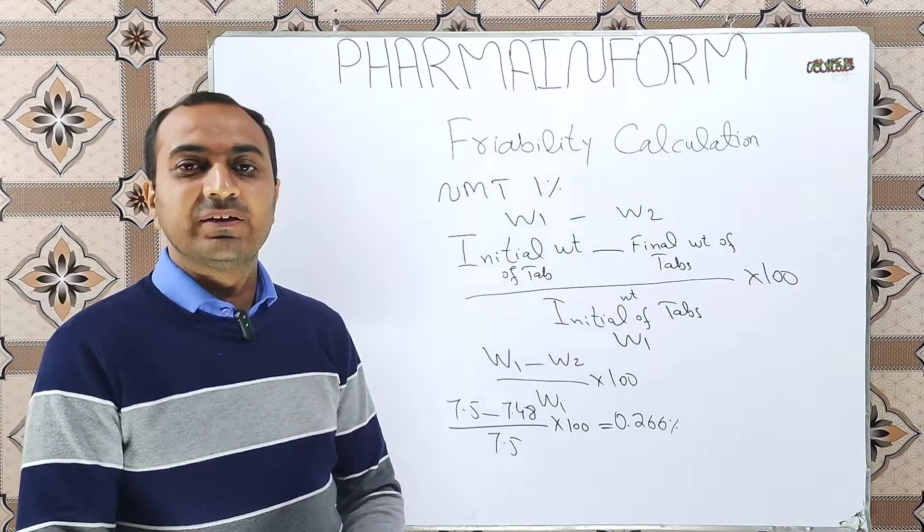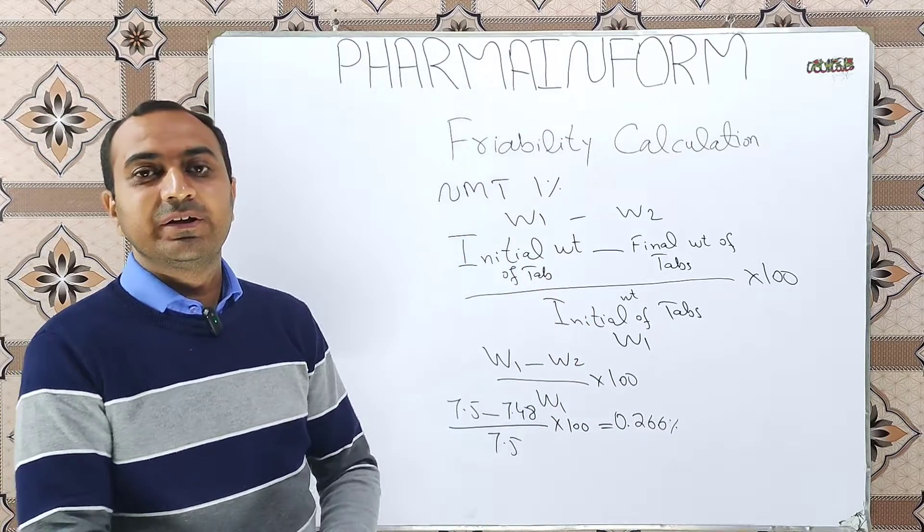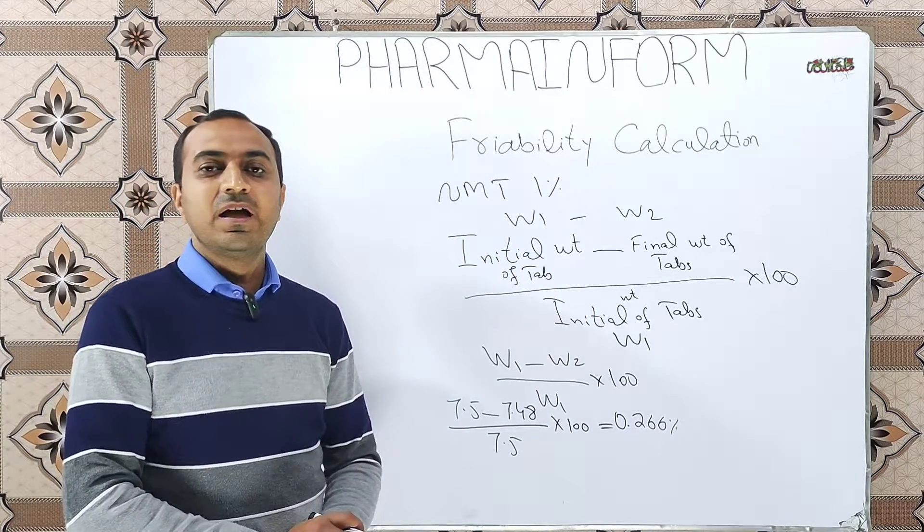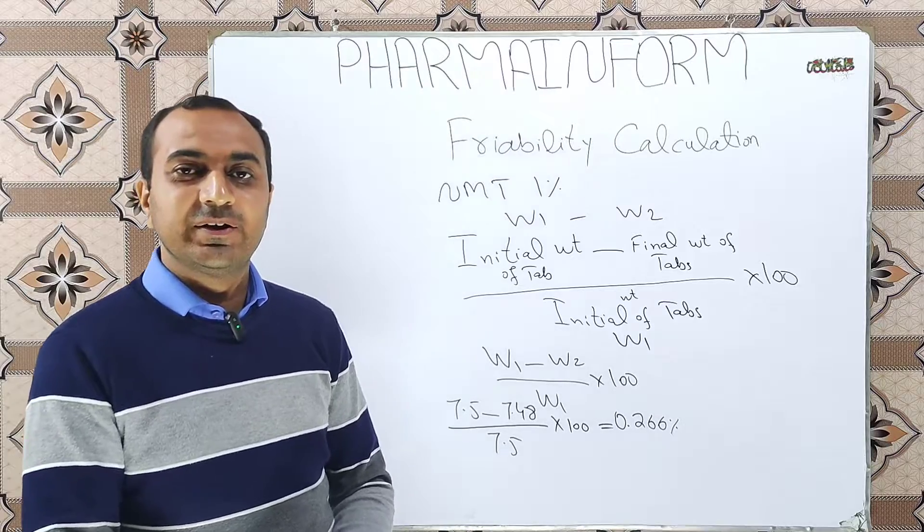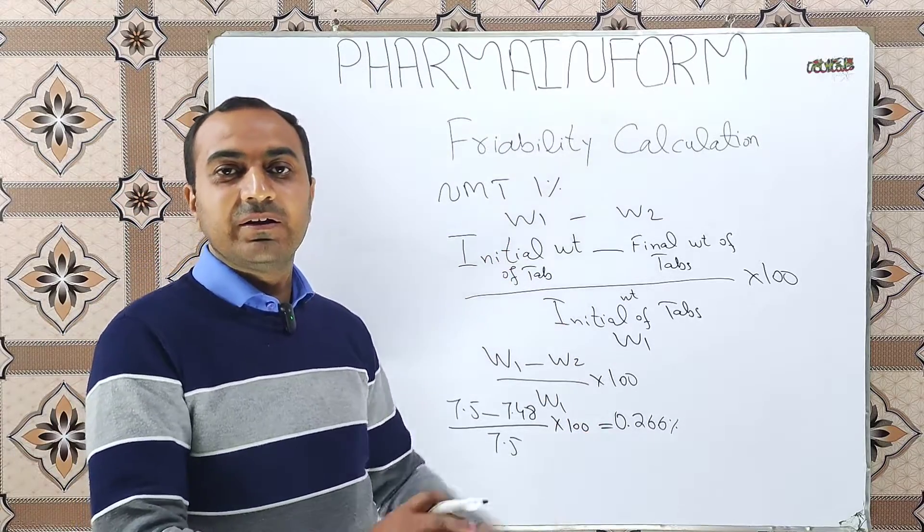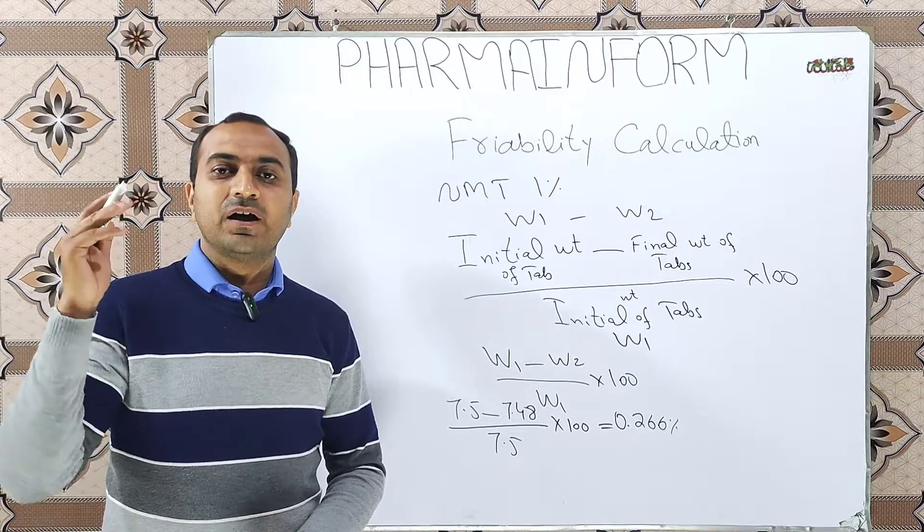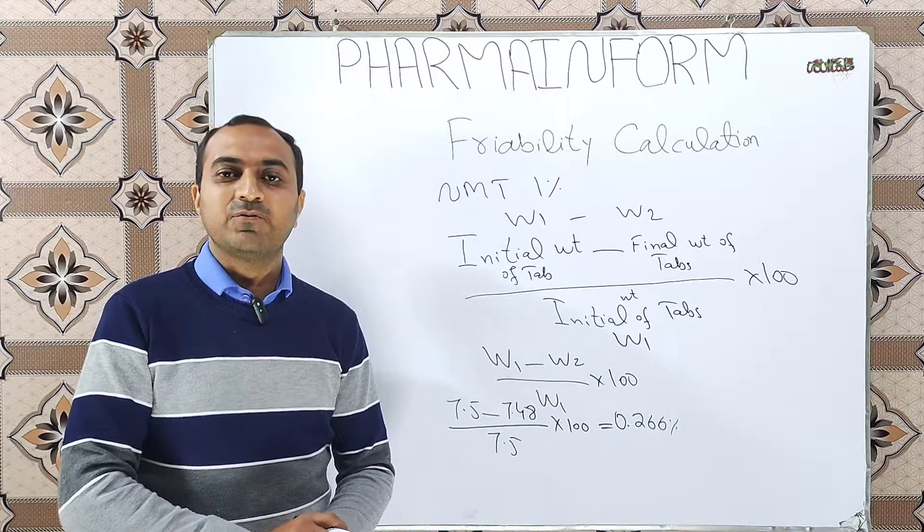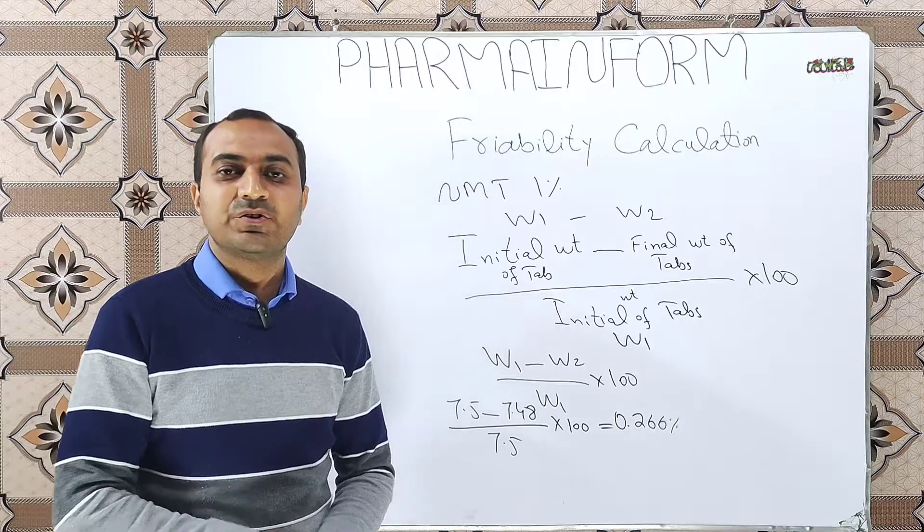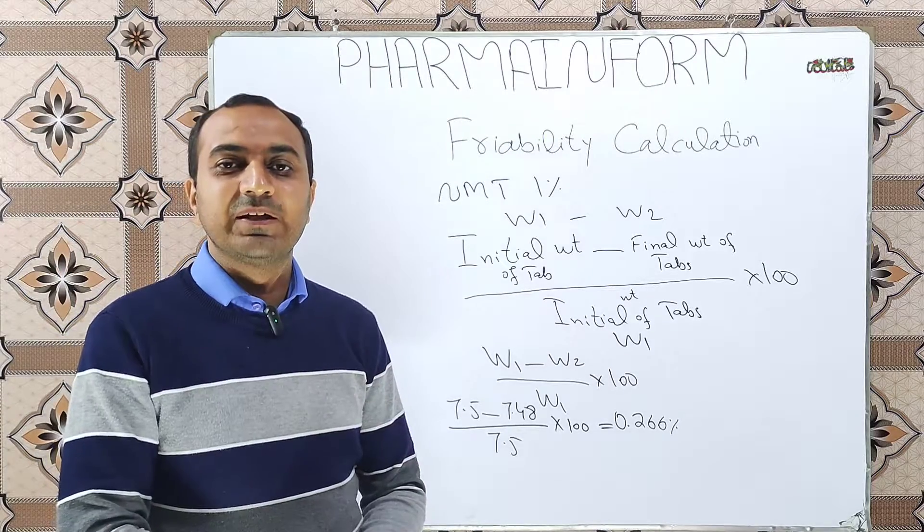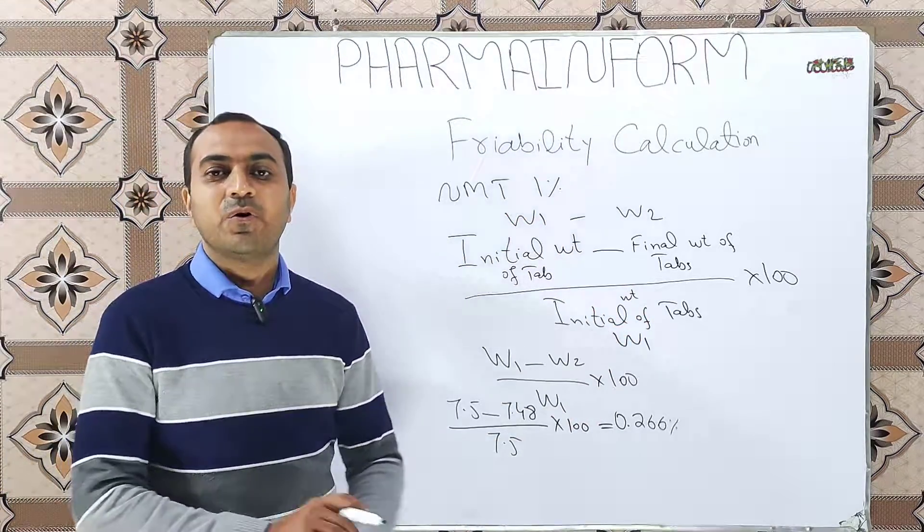I hope now you can easily calculate the friability by using the formula: initial weight minus final weight divided by initial weight into 100. If you have any confusion, you can ask in the comment box, and if you want to learn more calculations, do visit the playlist of calculations on the channel PharmaInform.